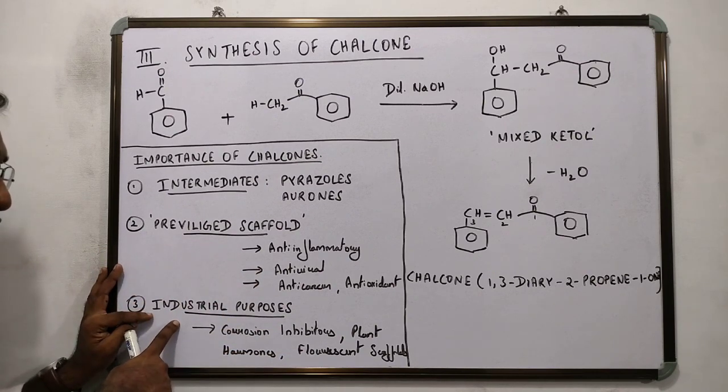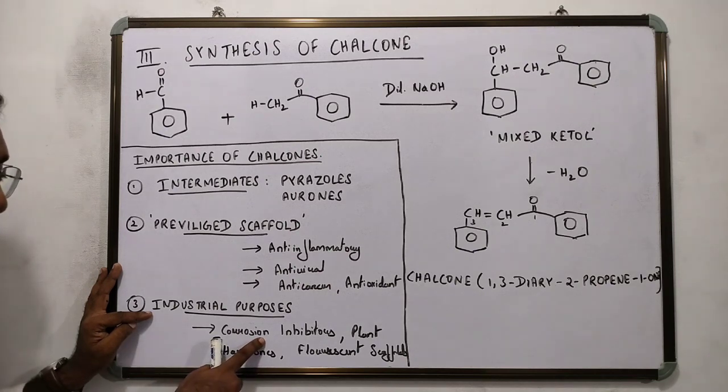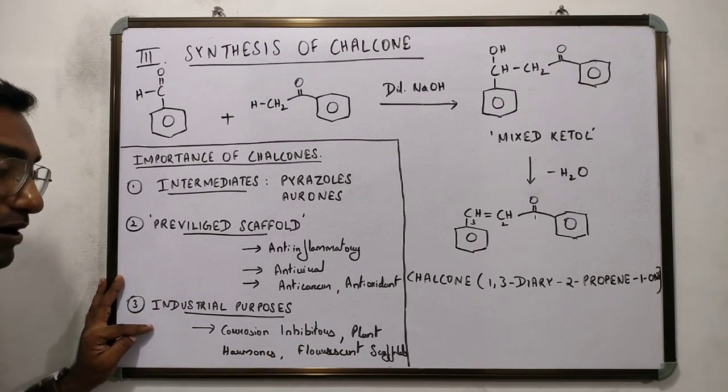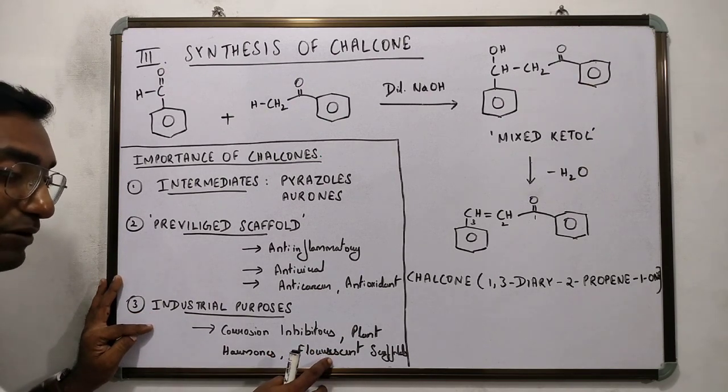Chalcones are also used for industrial purposes. It is used as a corrosion inhibitor, as plant hormones, and it occurs in a number of compounds that have fluorescent properties.